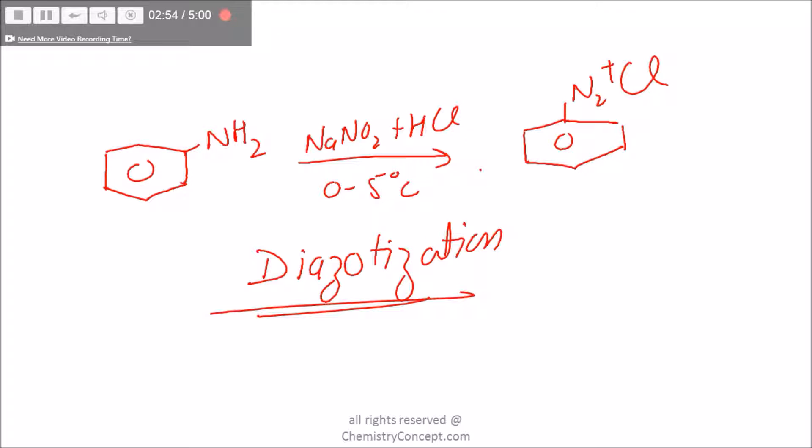Let me make it more accurate: it is actually 2HCl at 0 to 5°C, and along with this we get N2 and 2 moles of H2O.